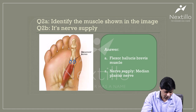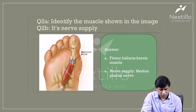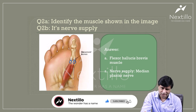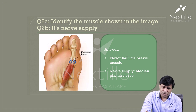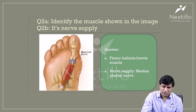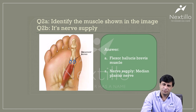About its nerve supply: both hallucis muscles — abductor hallucis and flexor hallucis brevis — are supplied by the medial plantar nerve. Out of 18 intrinsic muscles of the sole, 14 are supplied by the lateral plantar nerve and only four are supplied by the medial plantar nerve.